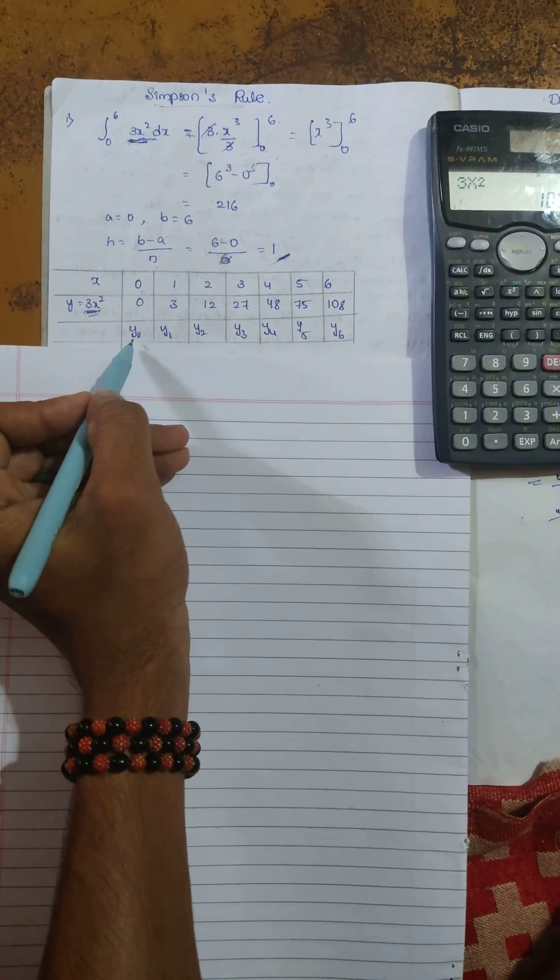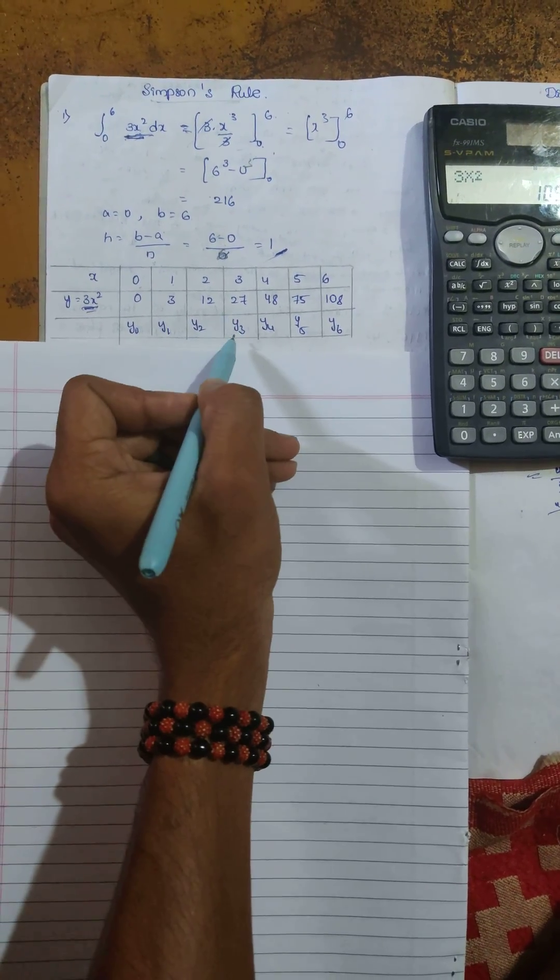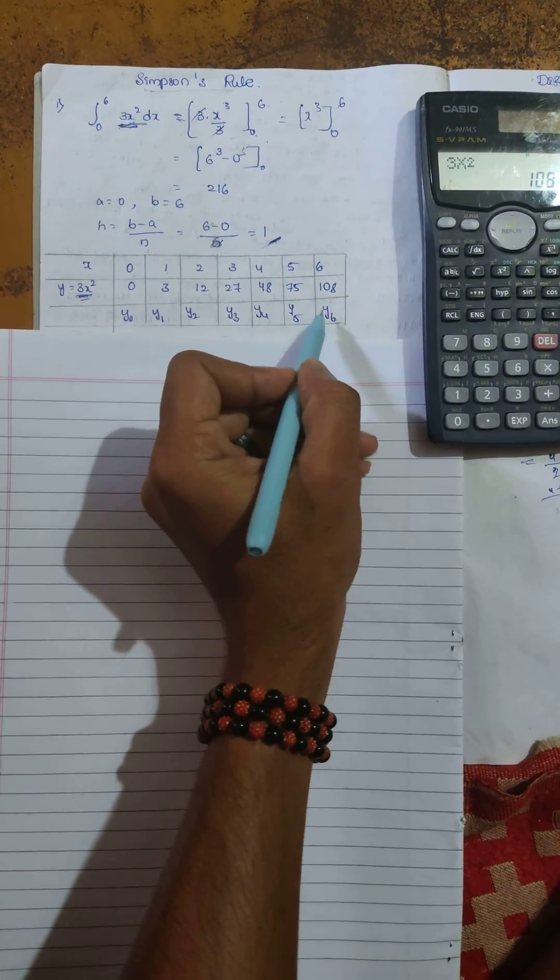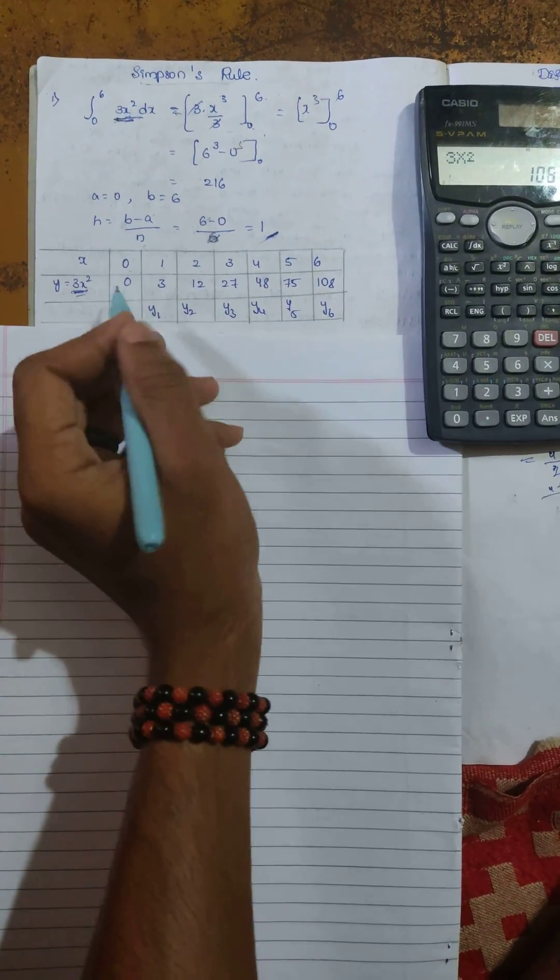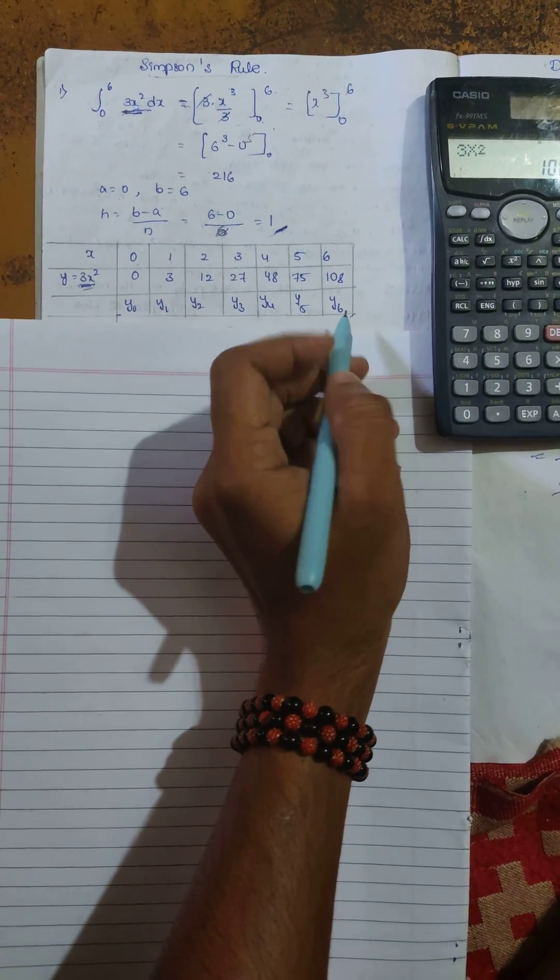Where 0 equals y₀, 3 equals y₁, 12 equals y₂, 27 equals y₃, 48 equals y₄, 75 equals y₅, and 108 equals y₆. These are the y₀ to y₆ values. Thank you.